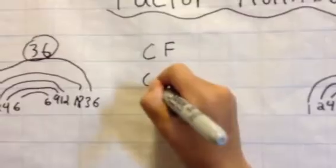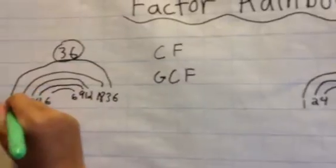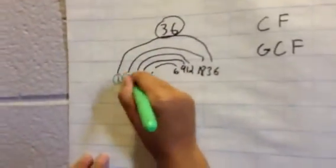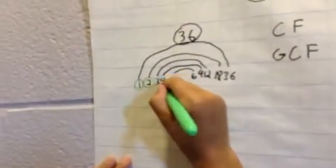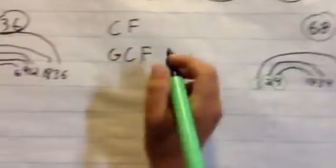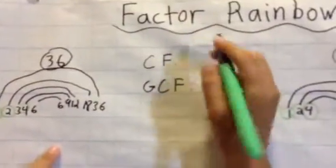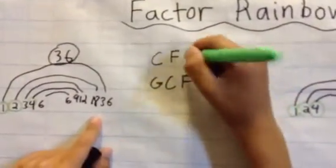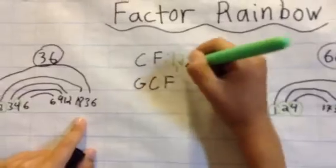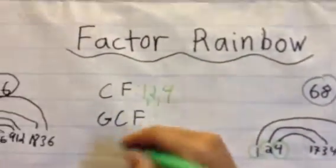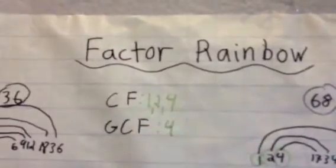Common factors and greatest common factor. Let's see what they are. The common factors are 1, 2, and 4. And over here it's also 1, 2, and 4. So the greatest common factor is 4.